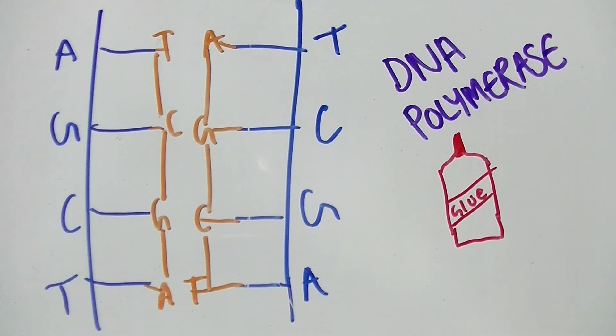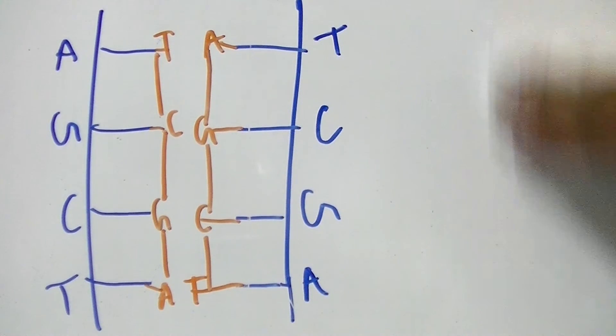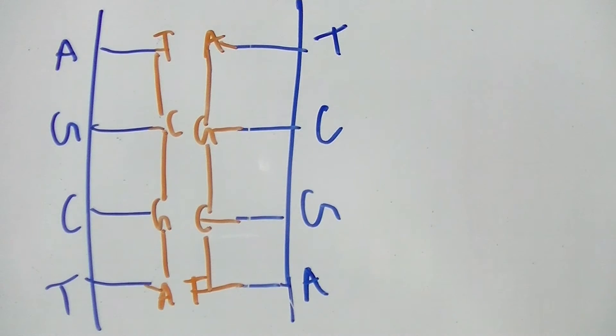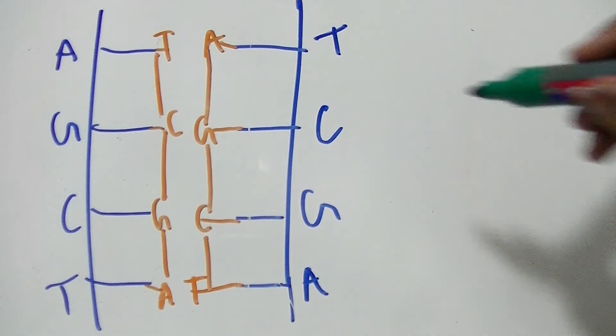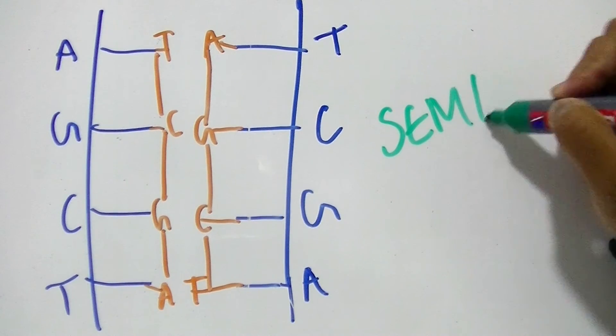New hydrogen bonds then form between the strands, and therefore semi-conservative replication occurs.